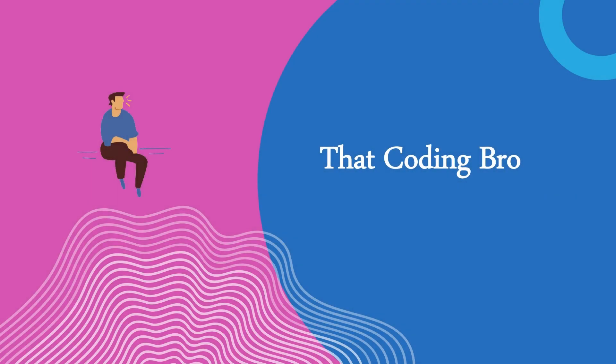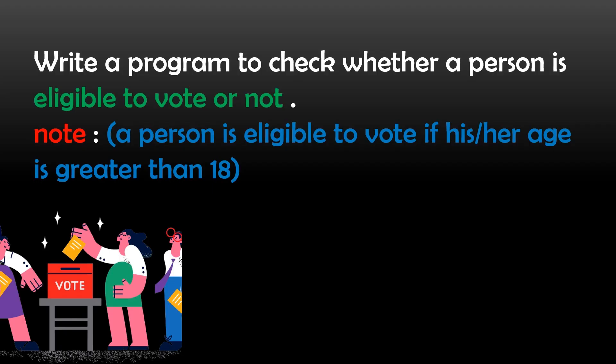Welcome to Coding Bro. Today let us solve our question. Coming to today's question: write a program to check whether a person is eligible to vote or not.